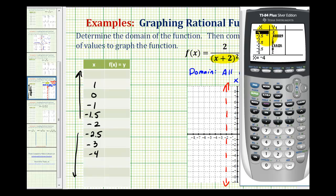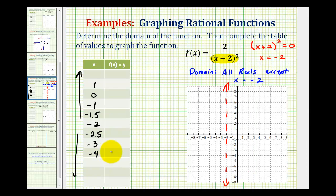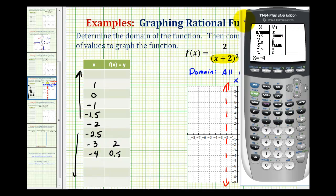we can complete the table of values. So when x is -4, y is equal to 0.5. And when x is -3, y is equal to positive 2. When x is -2.5, y is equal to 8. Of course at -2, the calculator is showing an error because -2 is not in the domain. And notice at -1.5, y is also equal to 8.